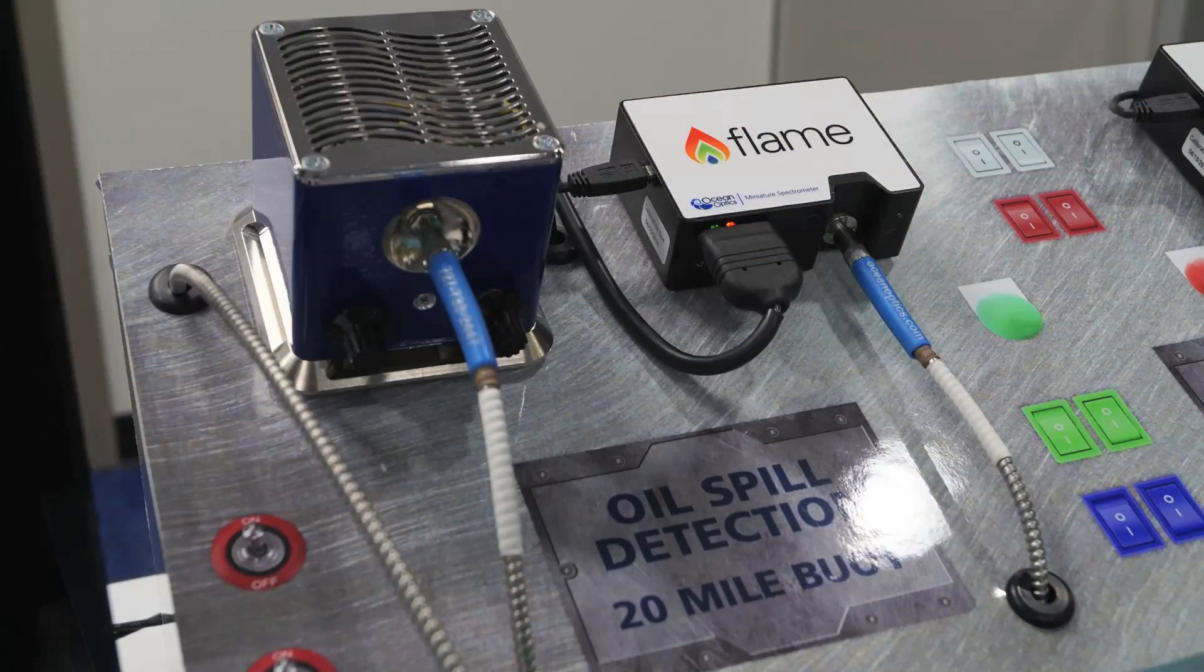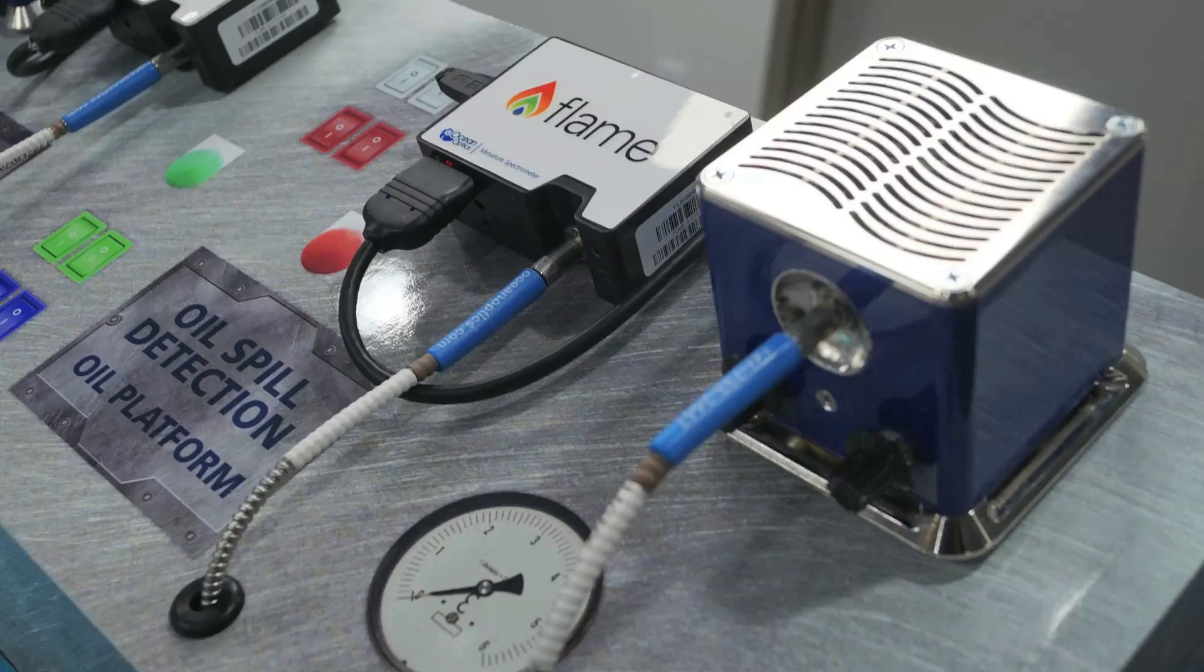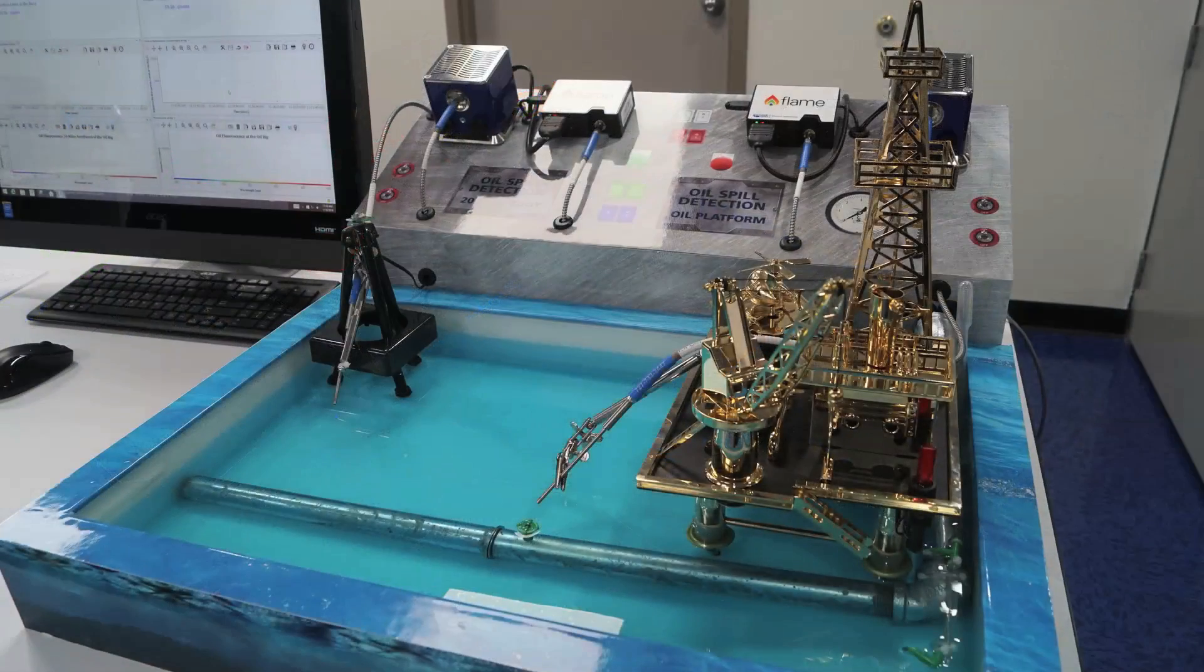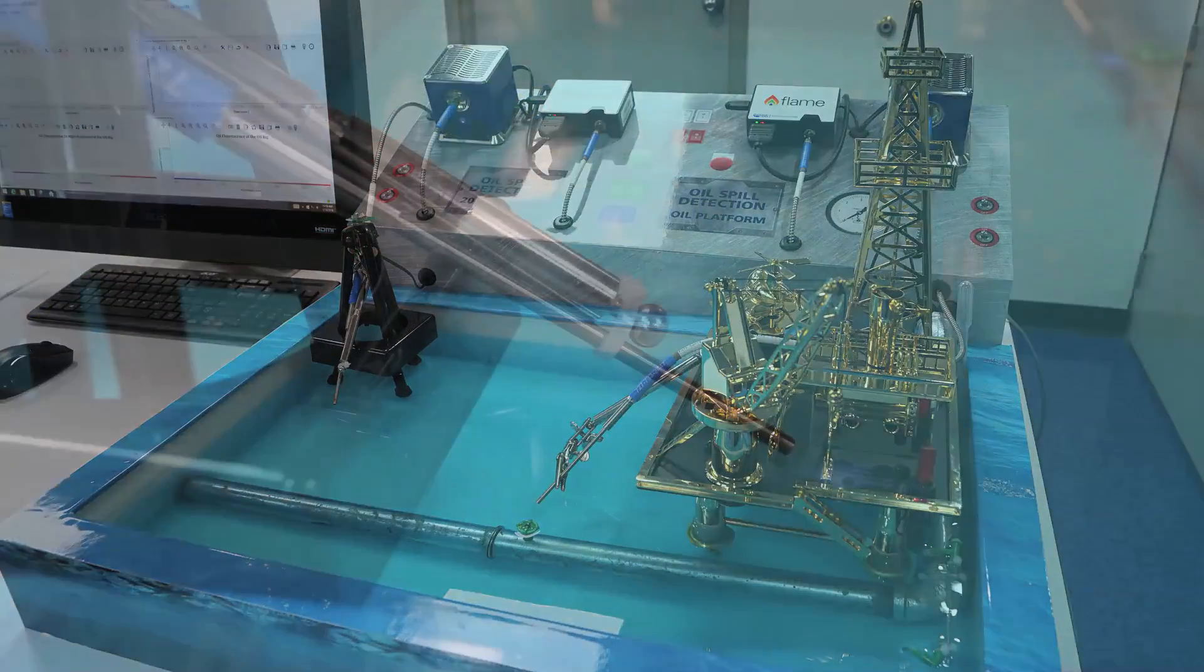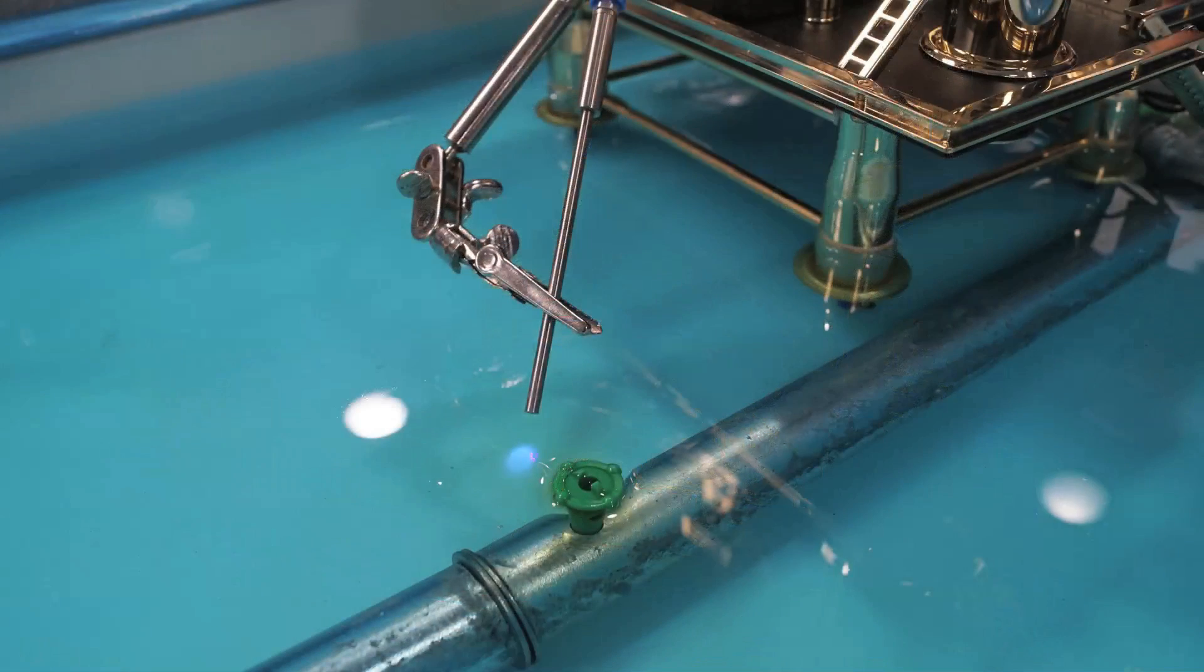Here we're showing our flame spectrometers measuring fluorescence using a 365 nanometer LED for excitation. We have our reflection probes continuously monitoring the surface of the water looking for fluorescence that would be indicative of the presence of oil.